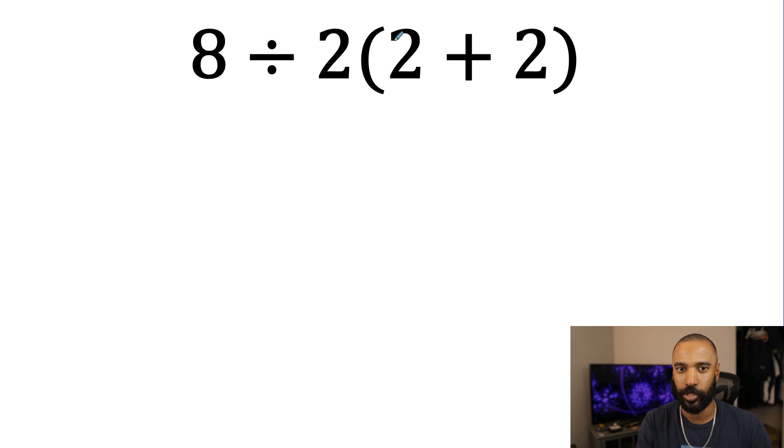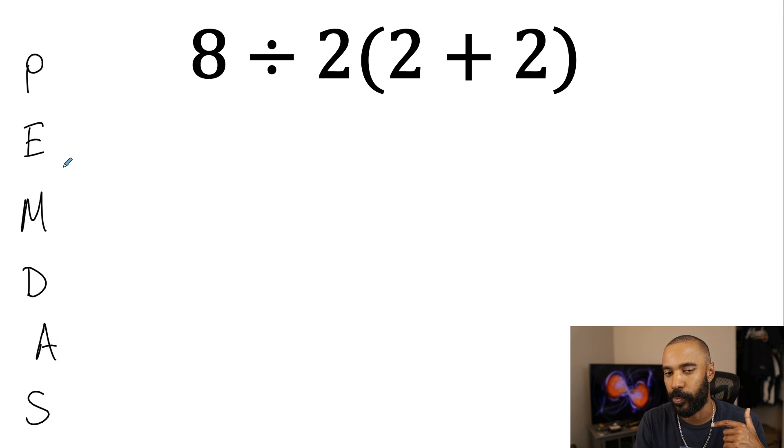So without further ado, let's go straight into the problem to start with. This is 8 divided by 2 times the quantity 2 plus 2. For those who just want to see how to do it correctly, I'll go and start with that. But in order to explain it, I have to make sure that you understand your order of operations because that's where a lot of people would mess up on this problem. So starting off, I'm just going to go ahead and write out what I learned when I was a young pup: Please Excuse My Dear Aunt Sally. It was a nice mnemonic device for the order of operations.